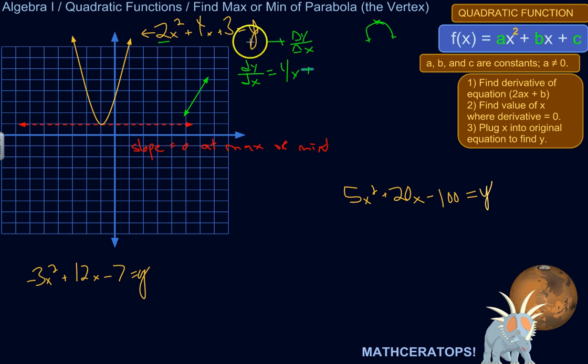Okay? I'm using a, b, and c in the sense here. So a is 2, b is 4, c is 3. So the derivative, the equation that tells you what the slope is, is 2 times a, in this case 2 times 2, plus b. So 4x plus 4. So that's it.